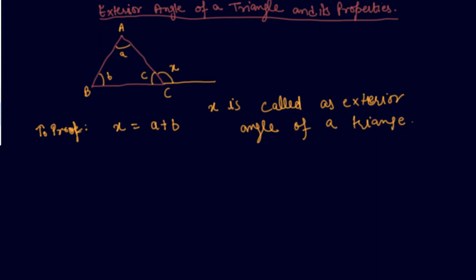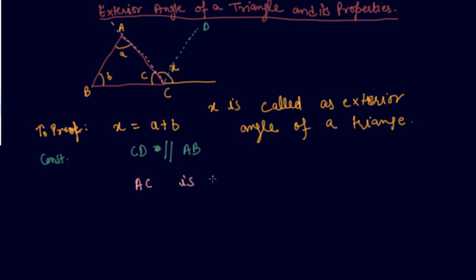What I will do is make a construction in which I will draw a line parallel to AB — let's say this line is CD. So in the construction I will write CD parallel to AB. I hope students you have watched my previous video on the properties of different angles where I told you about a transversal line. Because here I will use directly that property — AC is a transversal of the two parallel lines AB and CD.